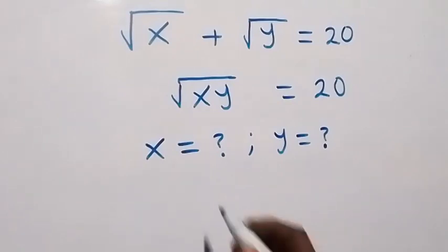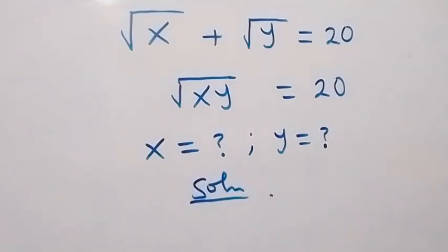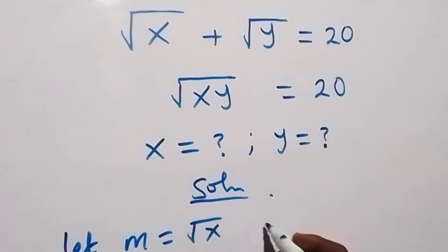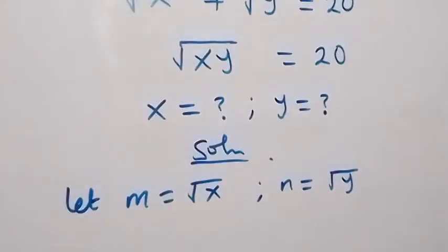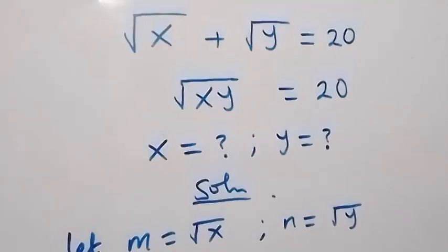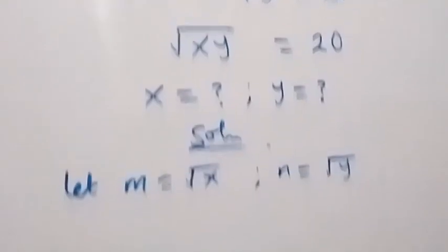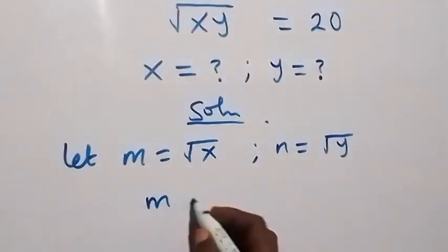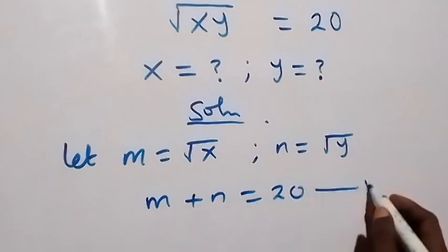Given square root expressions, let's represent root x with a letter. So let n be equal to root x, and m be equal to root y. Then from equation 1, the first equation becomes n plus m equals 20. Let's label this as equation 1.